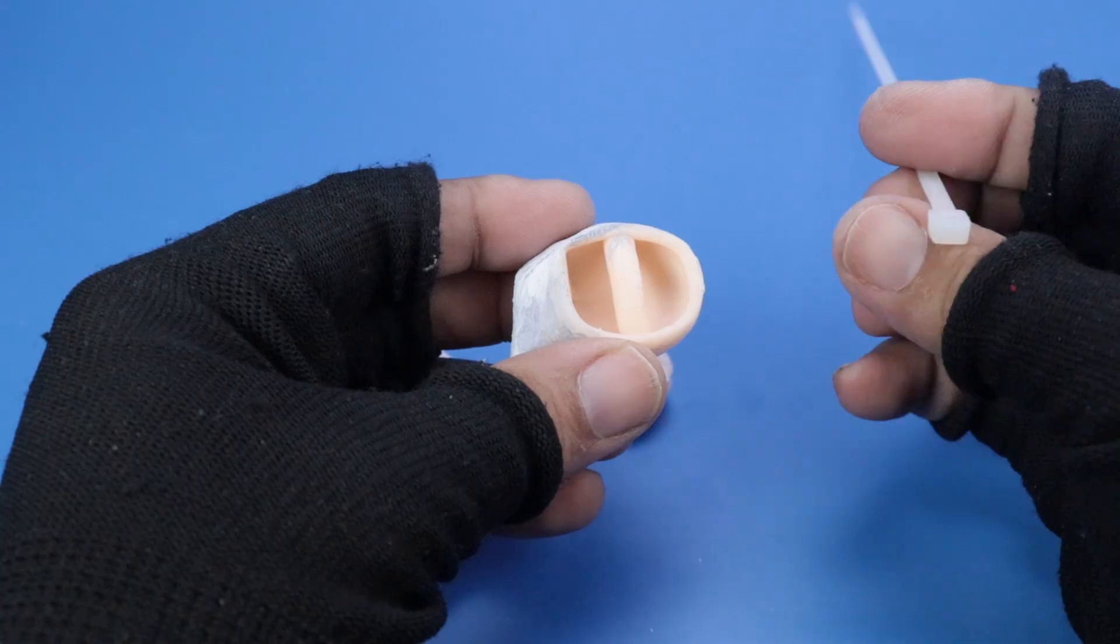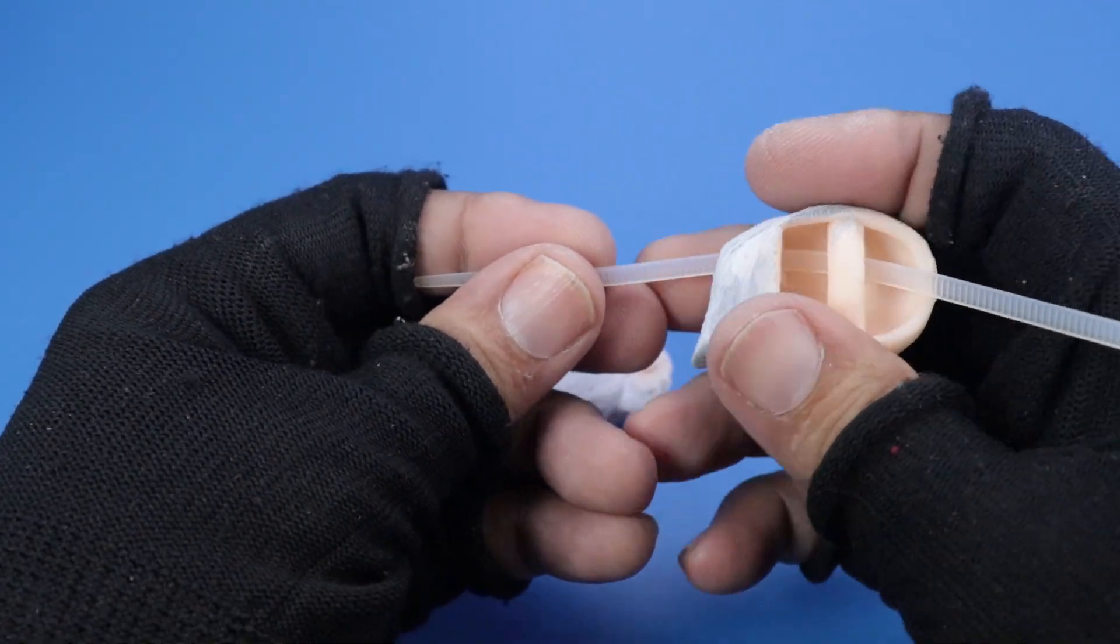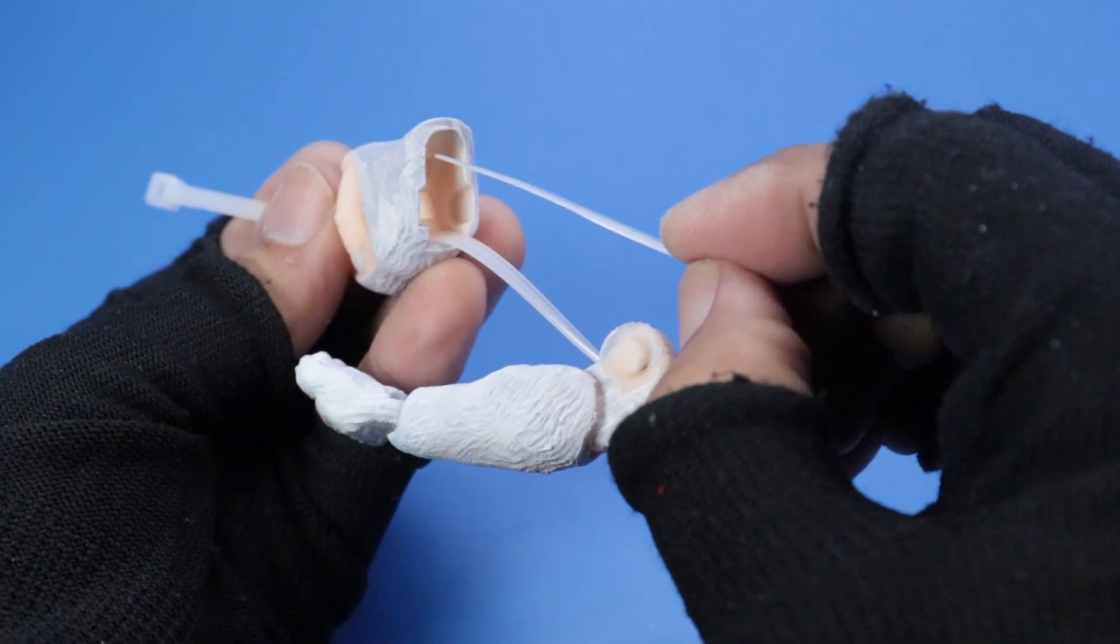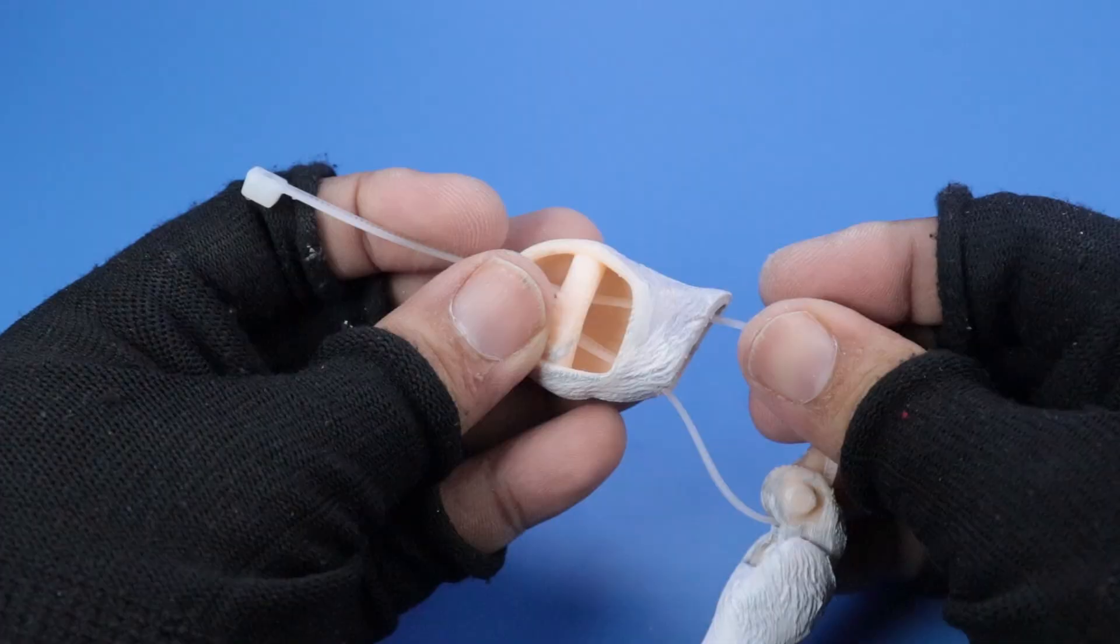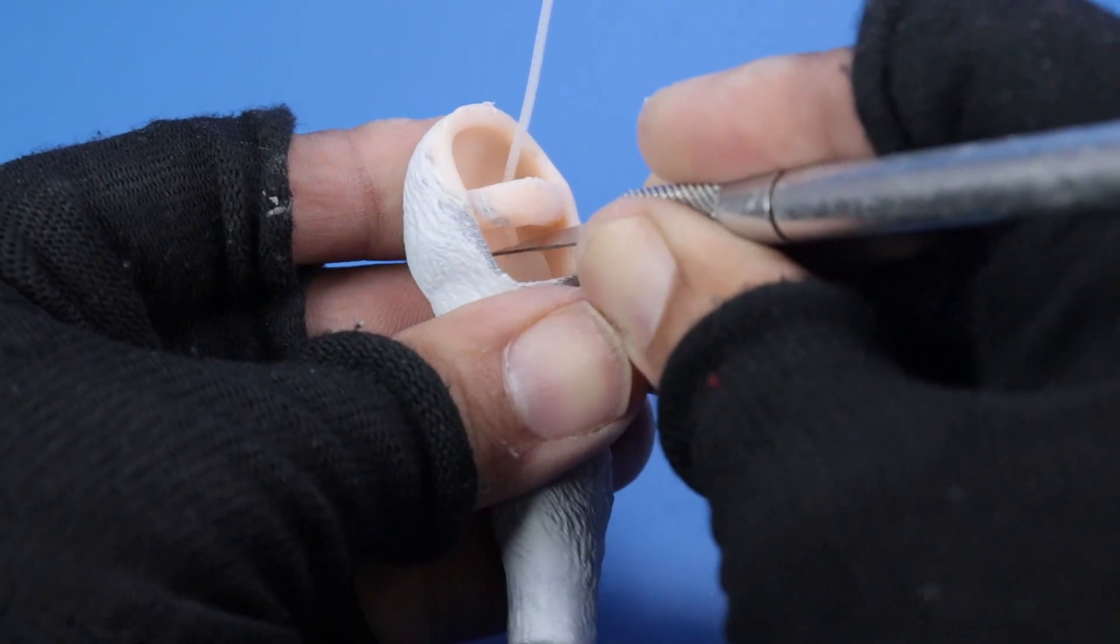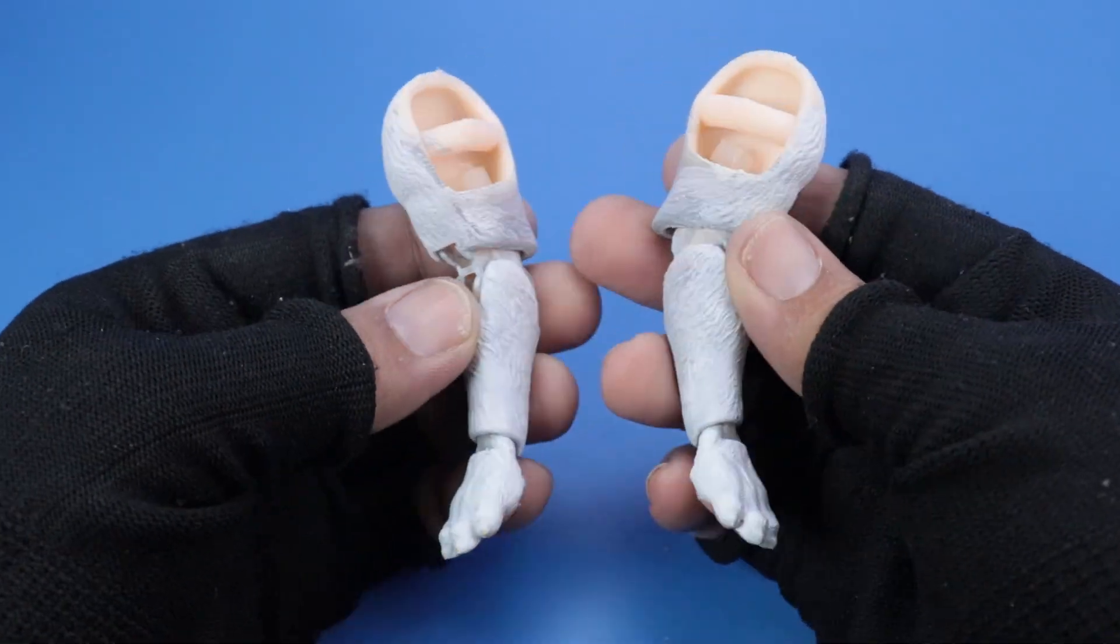After that, grab the shoulder and insert a zip tie into the cavity, feeding it through one of the smaller slots. Guide it into the upper bridge of the elbow, then back up into the shoulder through the opposite slot. Lock the zip tie, tighten it, and trim off the excess. Do the same for the other front leg.